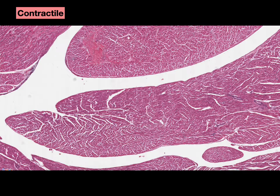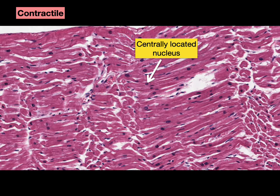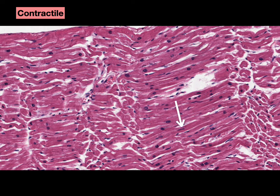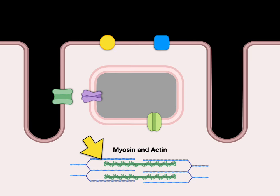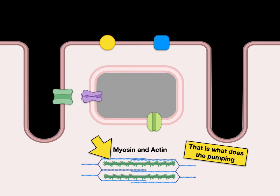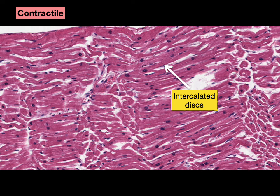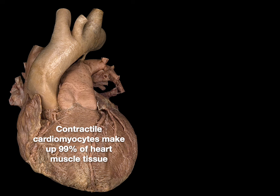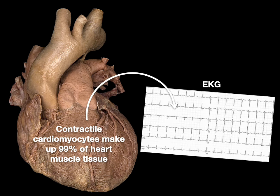If we take an H&E stain of a ventricle and zoom in on it, we see these centrally located nuclei characteristic of heart muscle tissue, also the pink cytoplasm, which is really just myosin and actin filaments. These proteins contract and that's what does the pumping. We also have these intercalated discs. Contractile cardiomyocytes make up 99% of heart muscle tissue, so when the action potential spreads through the heart muscle, that's what is picked up on an EKG.